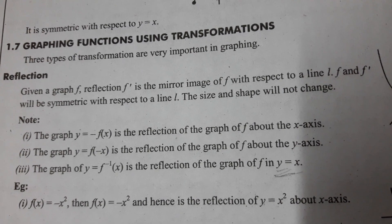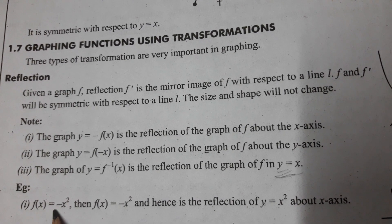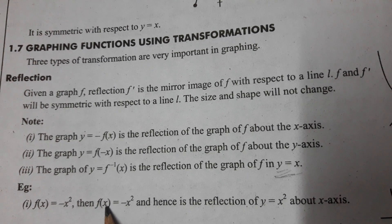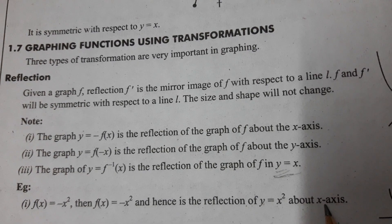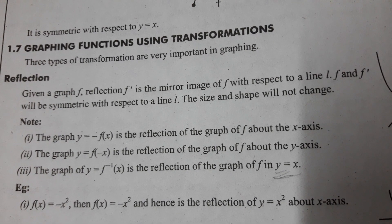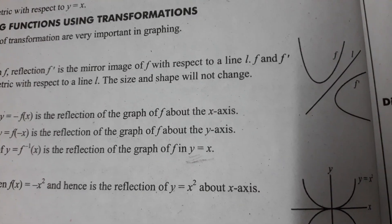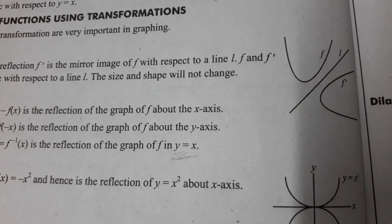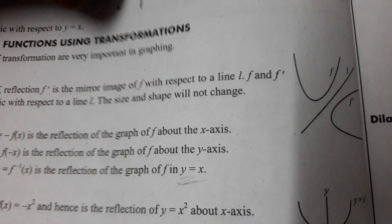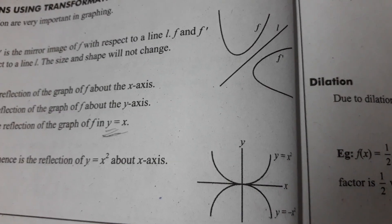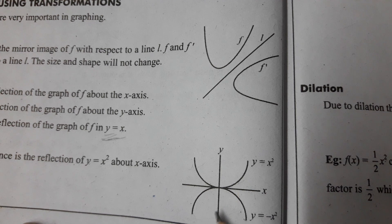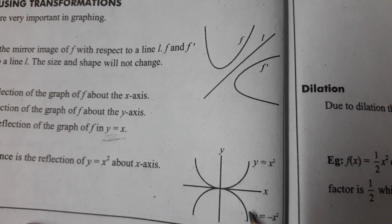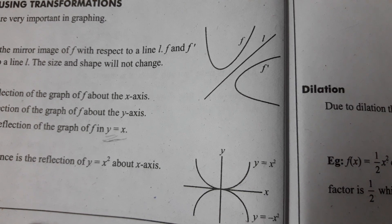Let us see one example. f(x) = −x². This is the reflection of y = x² about the x-axis. y = x² opens upward, so its reflection — the mirror image — y = −x² opens downward. The size and shape do not change, only the direction changes.